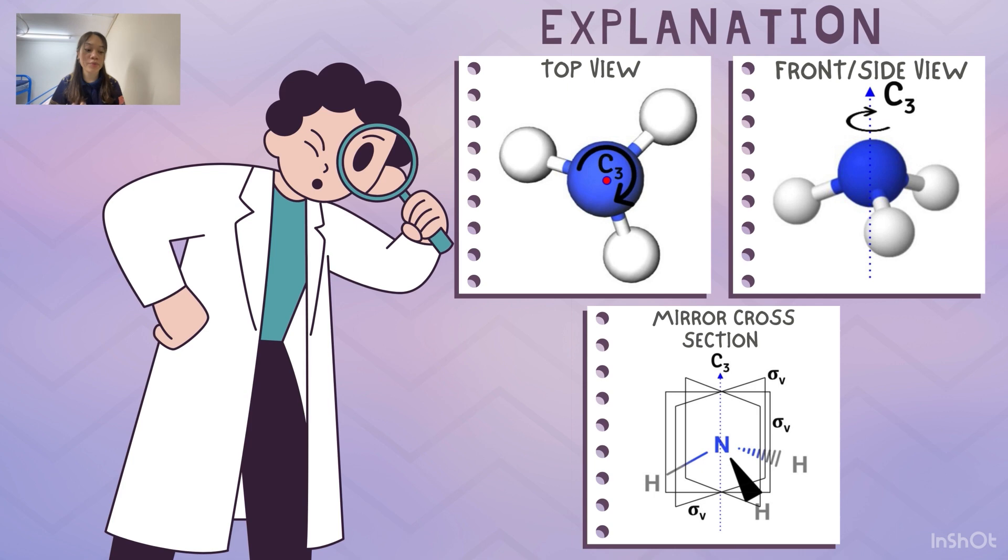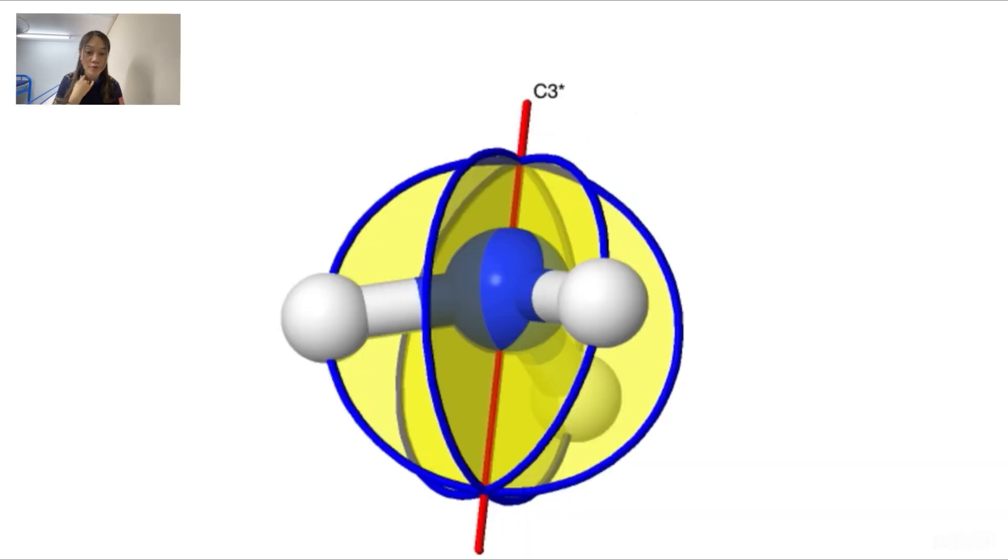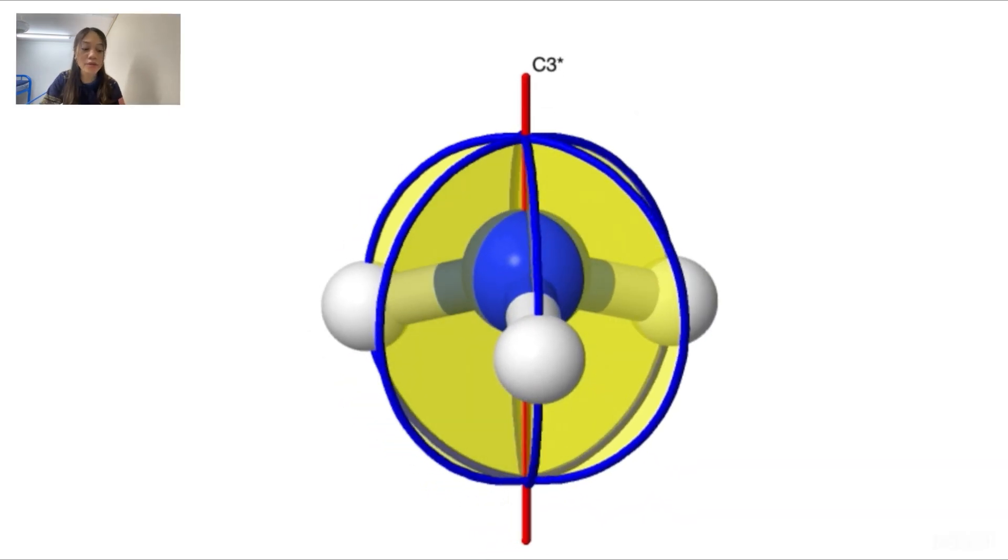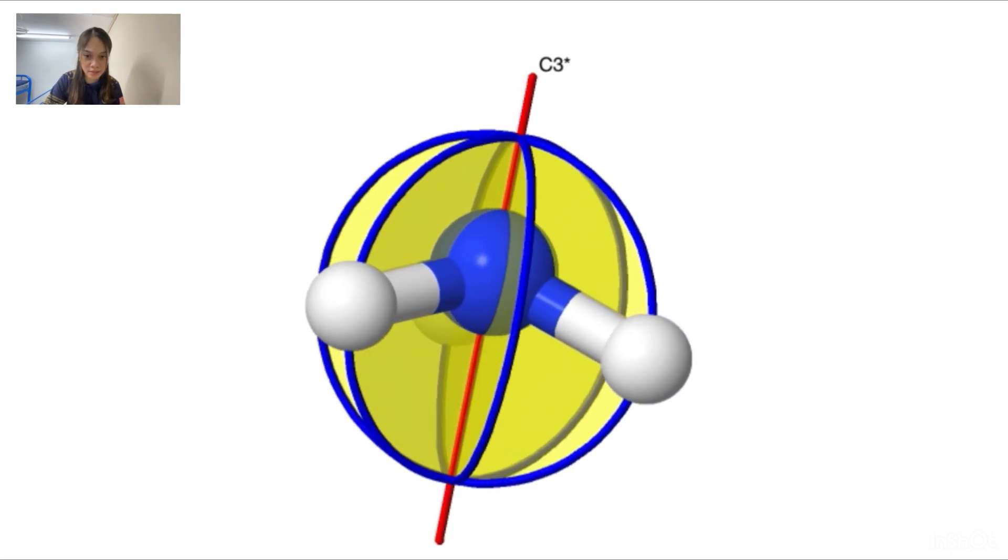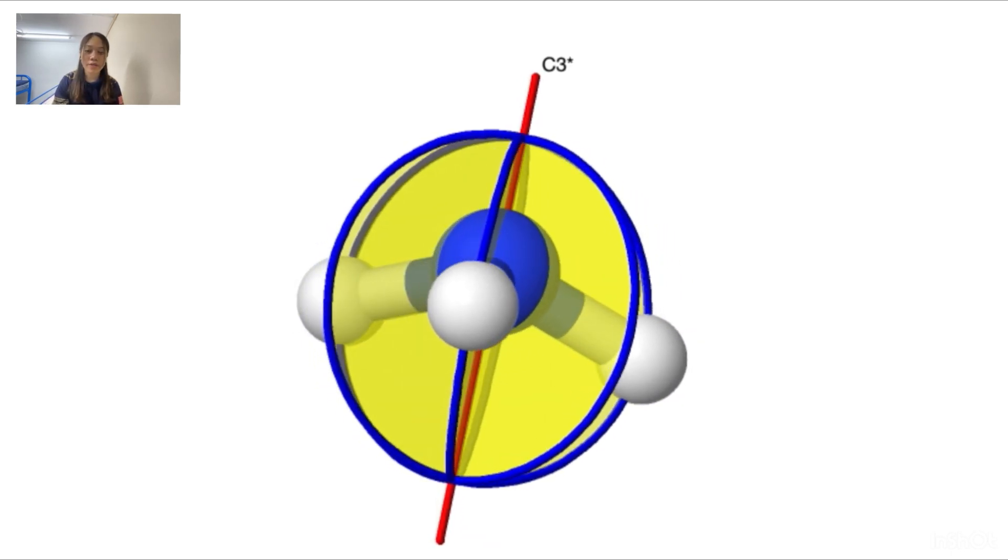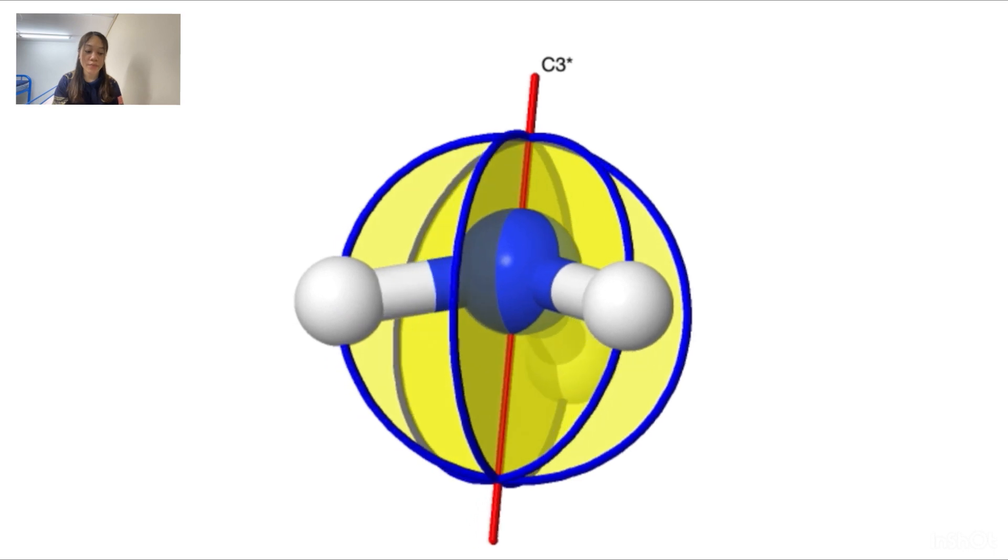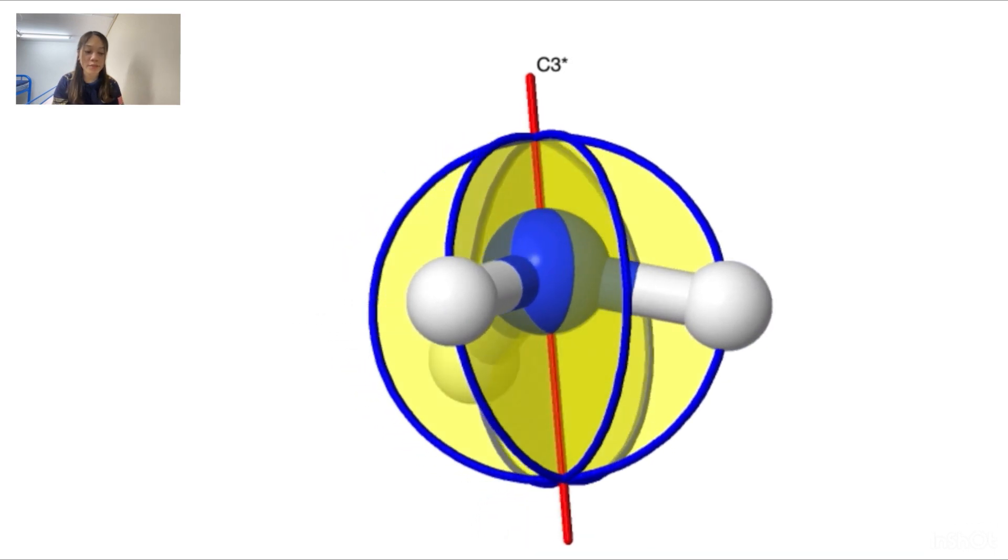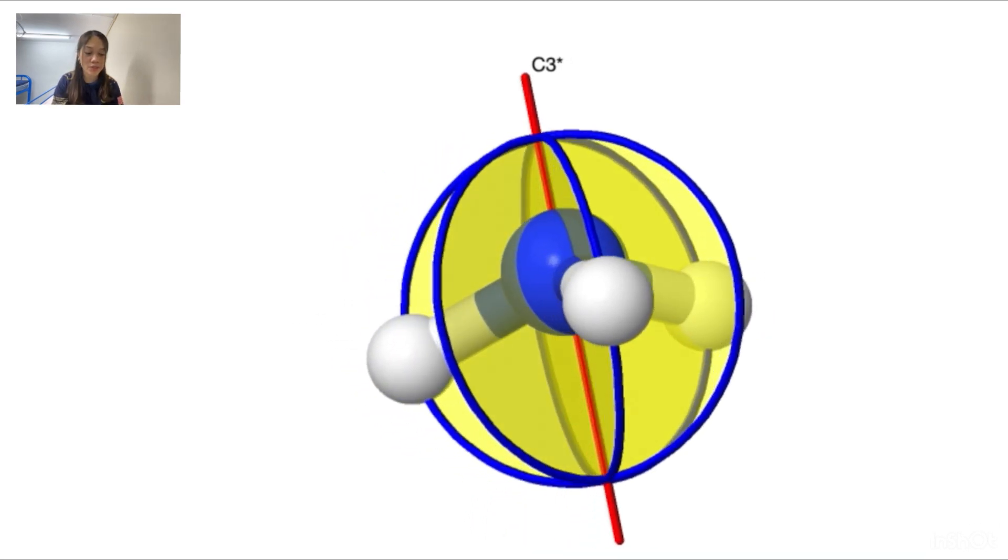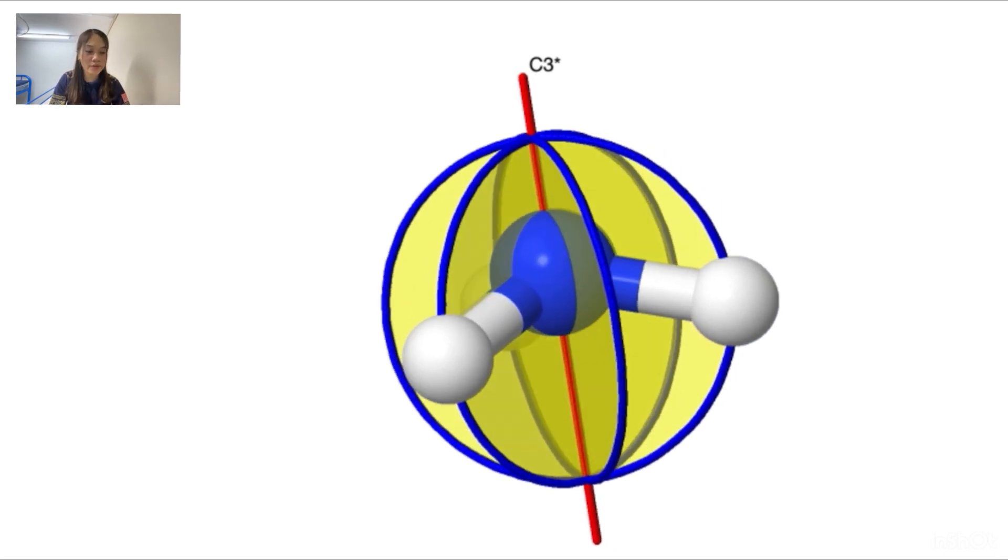Some symmetry operations in ammonia are rotation C3. Ammonia possesses a C3 rotation axis perpendicular to its molecular plane. This means that if we rotate the molecule by 120 degrees, it retains its original appearance.